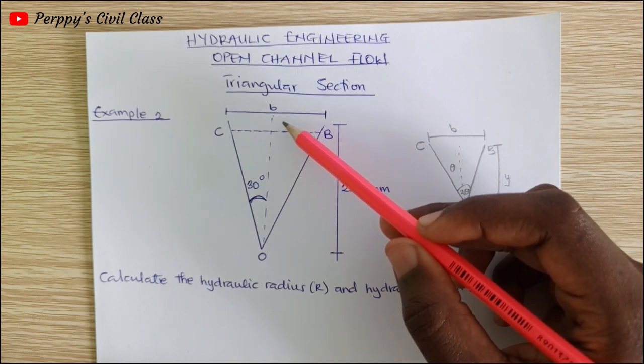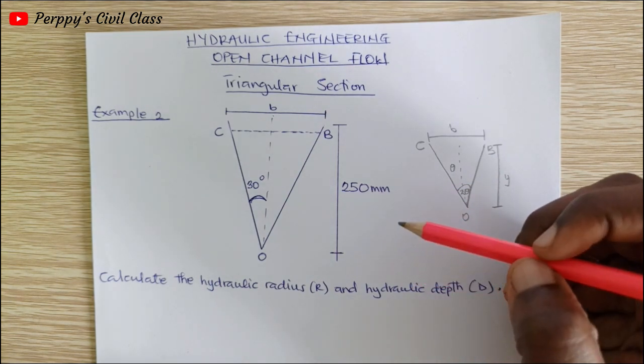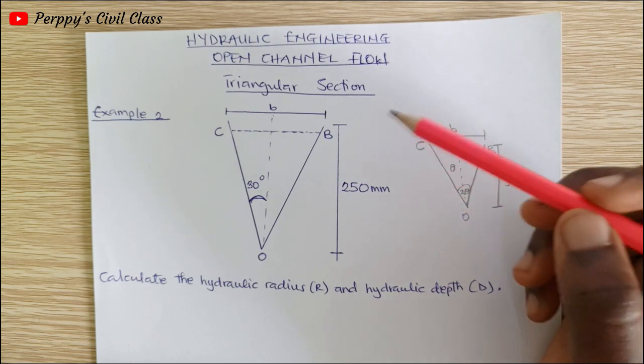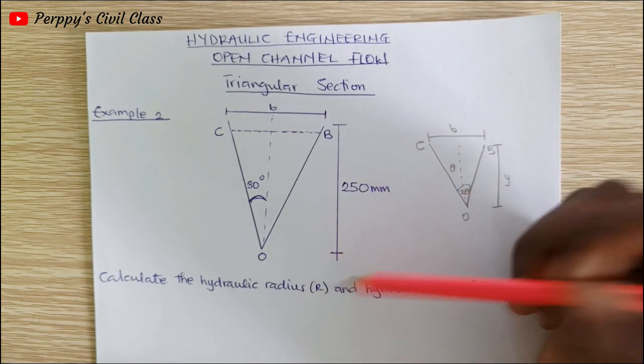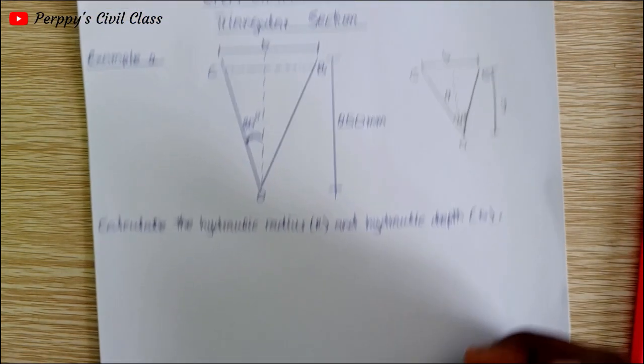Before we can go ahead and calculate for our area of flow and wetted perimeter, then we use those two information to calculate for our hydraulic radius R and our hydraulic depth D.